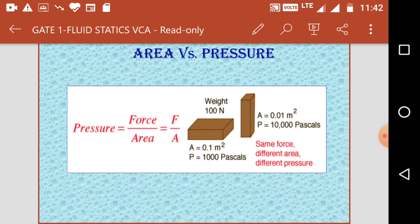Consider another element nearby. Area of cross section is 0.01 square meter, and the pressure for the same weight 100 newton is 100 divided by 0.01, which is 10,000 pascals. Same force, different area, pressure is different. Lesser area, pressure is more. Greater area, pressure is less. This you have to keep in mind.